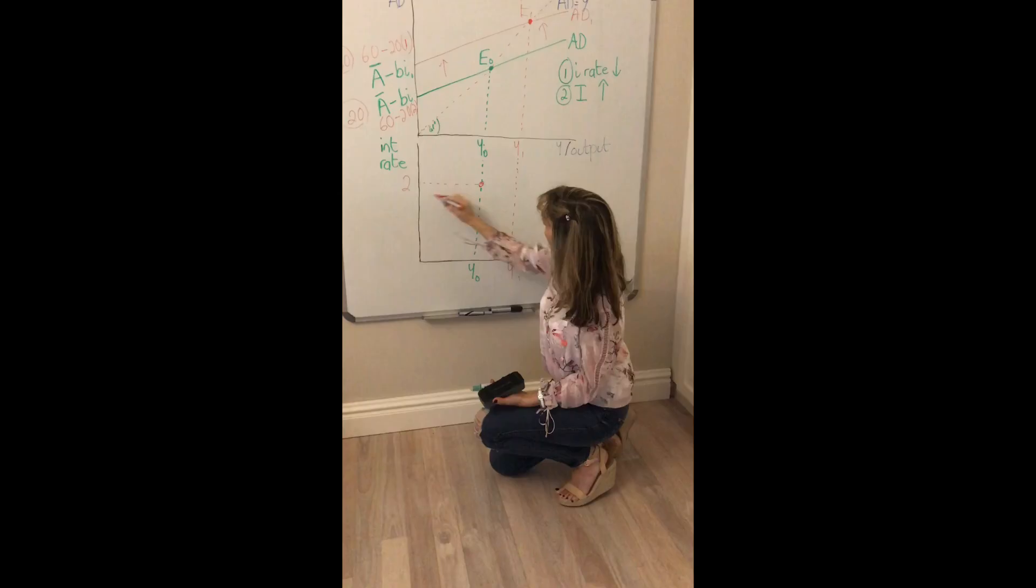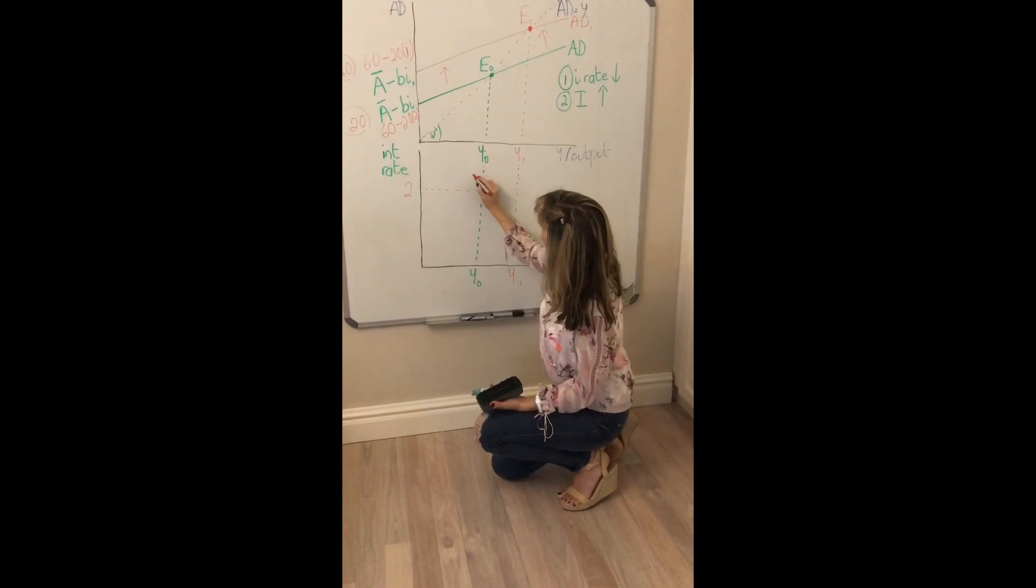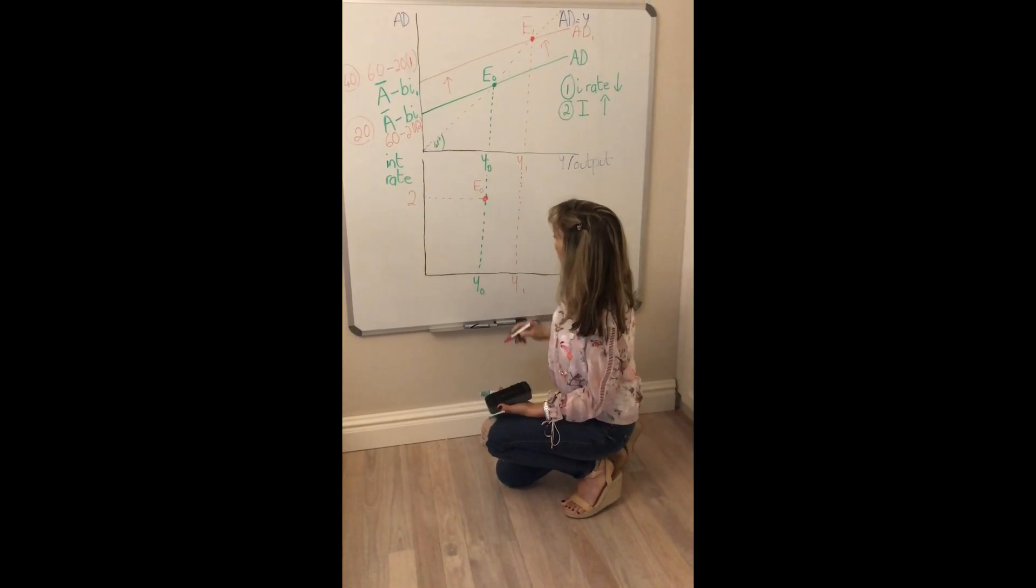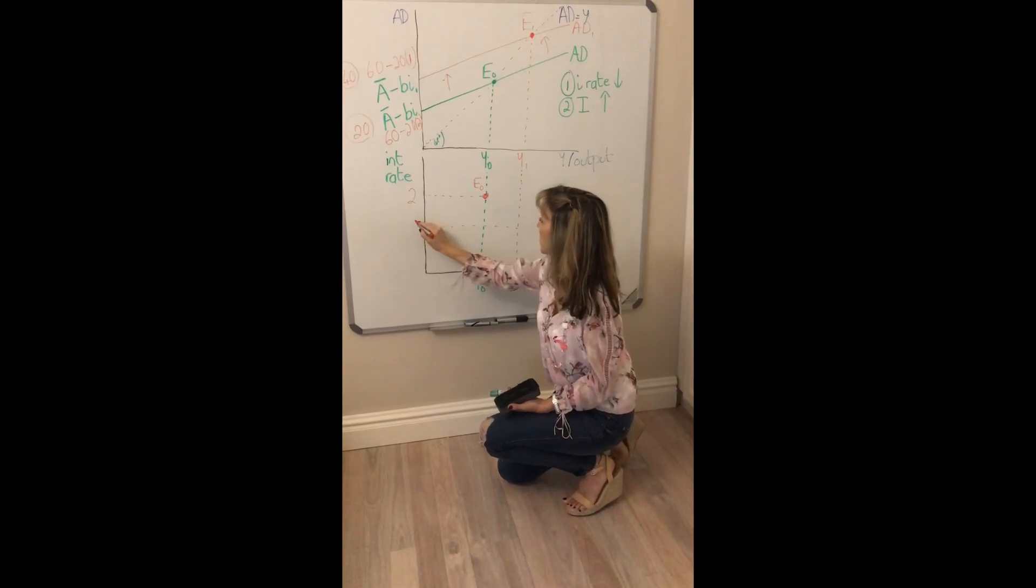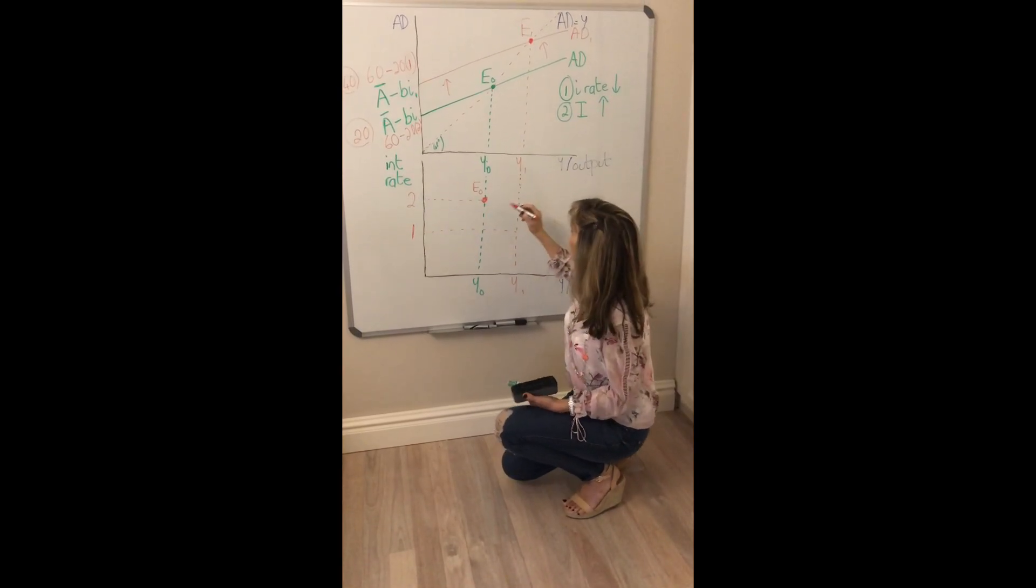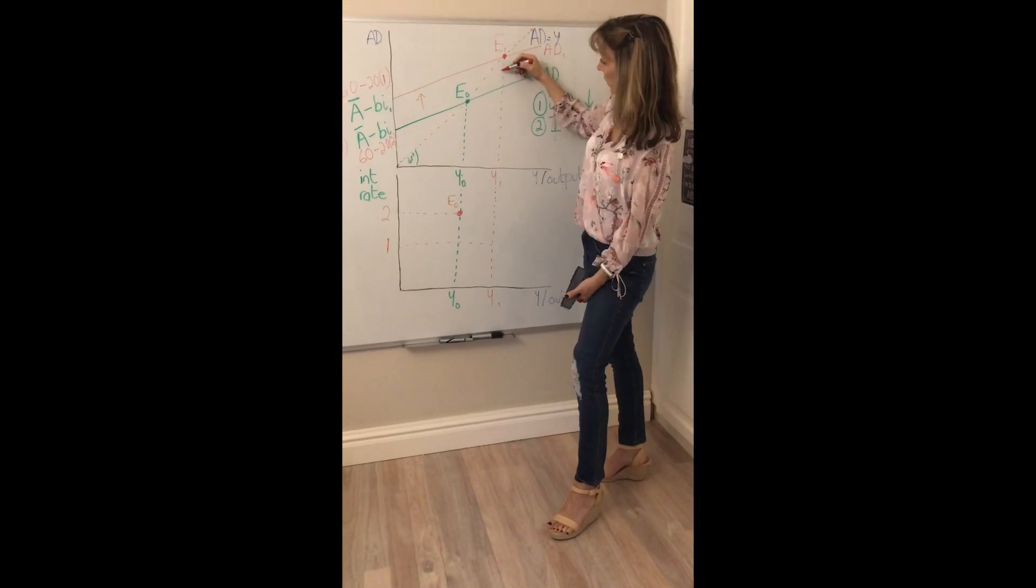So initially we're looking at what happens when our interest rate changes. Initially our interest rate was 2% and at 2% we know that our level of equilibrium income was Y0. 2% there's your equilibrium in that market. We'll call it E0 again.